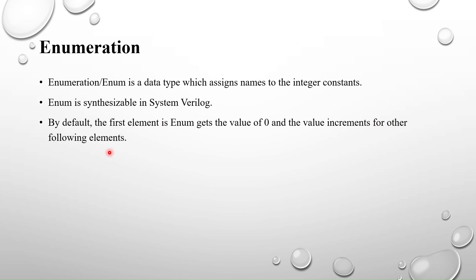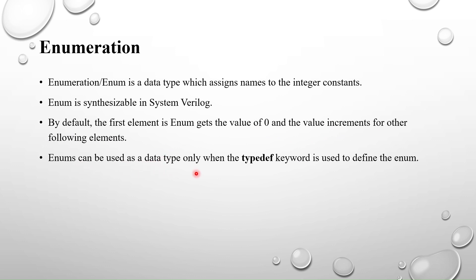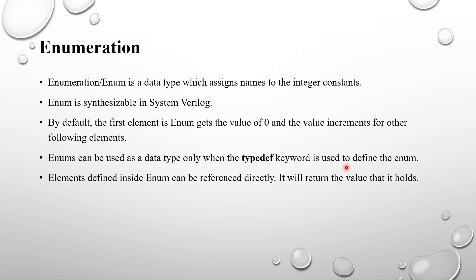By default, the type of an enumeration is int, so the first element gets the value zero and subsequent elements take incrementing values — 0, 1, 2, 3, 4, and so on. Enums can be used as a data type only when the typedef keyword is used to define the enum. The typedef keyword gives a new name to an existing data type.